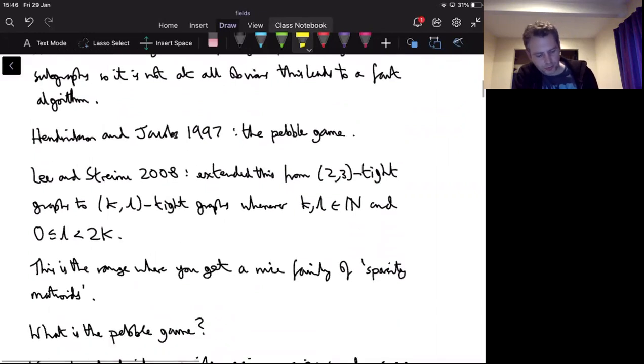So I'll say as much as I can in four minutes plus maybe a bit extra on an algorithm for testing two-dimensional rigidity, which really means an algorithm for testing two-free-tightness. So the algorithm, the credit for the algorithm initially goes to Bruce Hendrickson and Don Jacobs in 1997, and they called this the pebble game. And then there's a more recent paper by Audrey Lee St. John and Ileana Streanu in 2008, who showed this algorithm also works whenever K and L are natural numbers and L is between zero and 2K, strictly less than 2K.